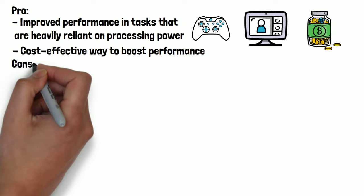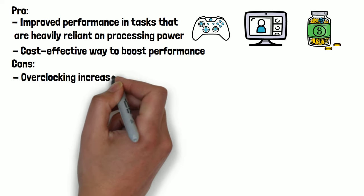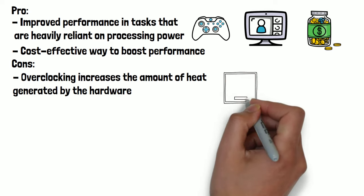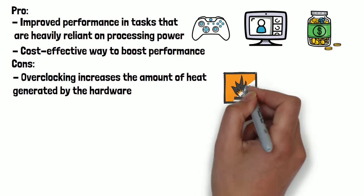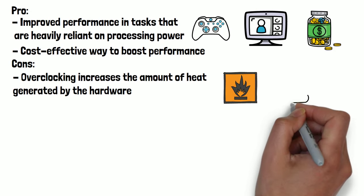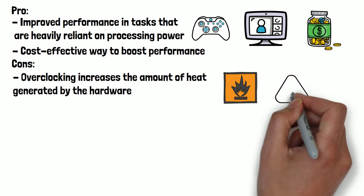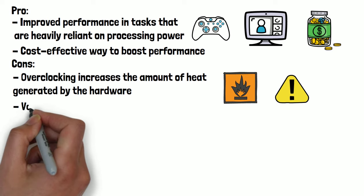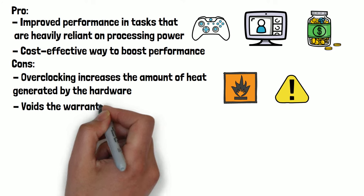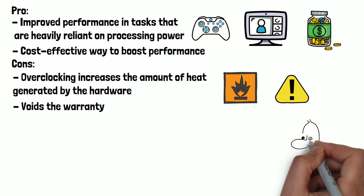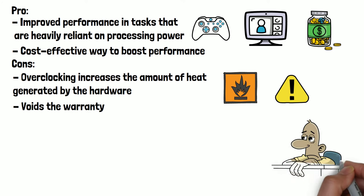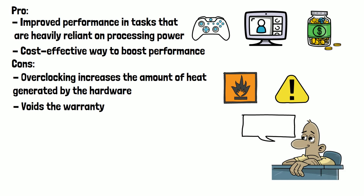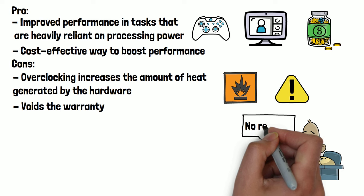Moving on to the cons, overclocking increases the amount of heat generated by the hardware. This can lead to higher operating temperatures and increased power consumption. Without adequate cooling, overclocked components may become unstable or even damaged due to overheating. Furthermore, overclocking typically voids the warranty of the hardware components being overclocked. Manufacturers often consider overclocking as a form of misuse or tampering and may refuse to honour warranties for damaged components.